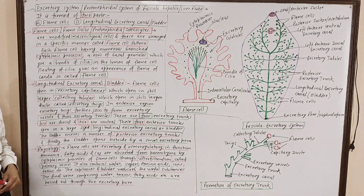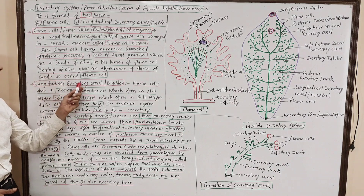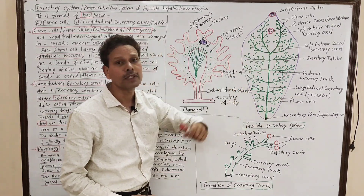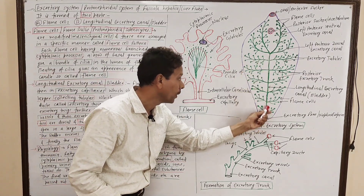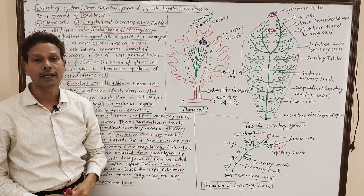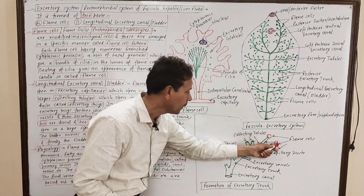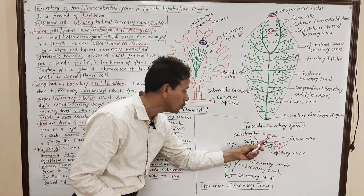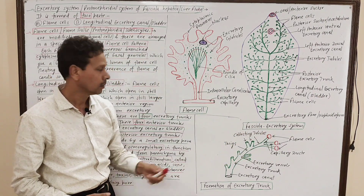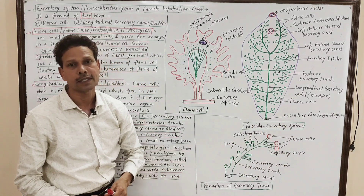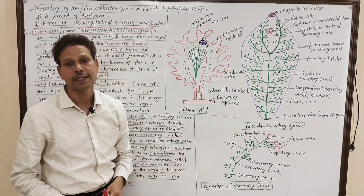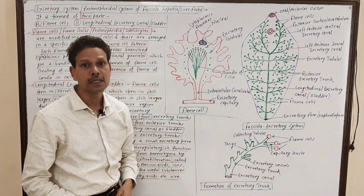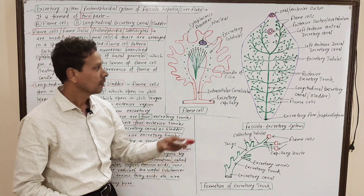The next component of this excretory system is the longitudinal excretory canal, or bladder. The flame cells open into the excretory capillaries, and these excretory capillaries join larger collecting tubules. The collecting tubules and excretory capillaries, or capillary ducts, collectively constitute excretory twigs. These excretory twigs further join large-sized excretory vessels, and then the excretory trunk, in the anterior region.